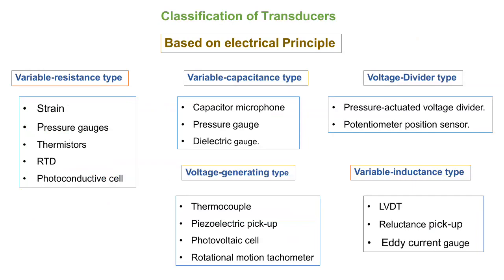One more classification is based on electrical principles. Almost all transducers can be classified by electrical principle since most transducers are based on electrical principles. Based on the electrical principle, there may be variable resistance type, variable capacitance type, variable inductance type, voltage divider type, and voltage generating type. Variable resistance type examples include strain gauges, pressure gauges, thermistors, RTD (resistance temperature detector), or photoconductive cells.